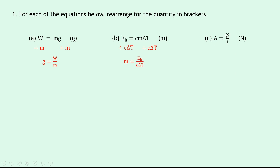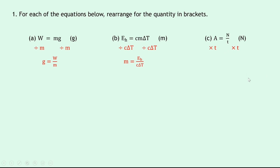Lastly in part C we've got A equals N over t — this is the activity equation in the radiation topic — and we're asked to rearrange for N. On the right hand side we've got t on the bottom of a fraction, so to get rid of that denominator we multiply both sides by t. That gives us A times t on one side and N on its own on the other, so swapping over we get N equals A times t.